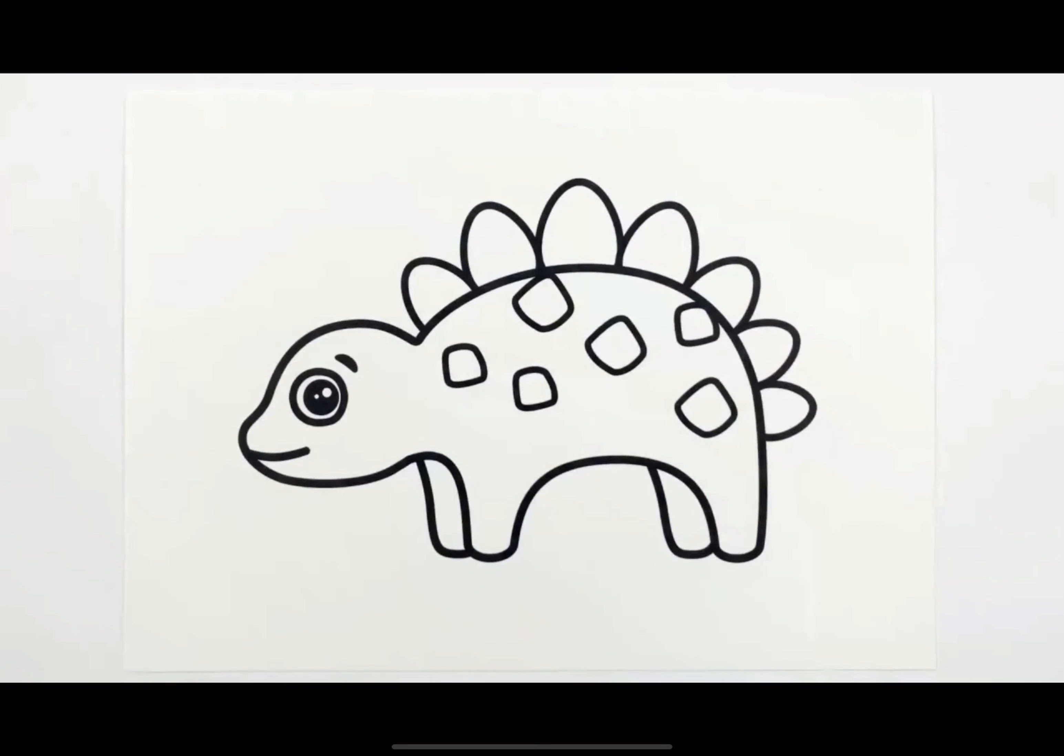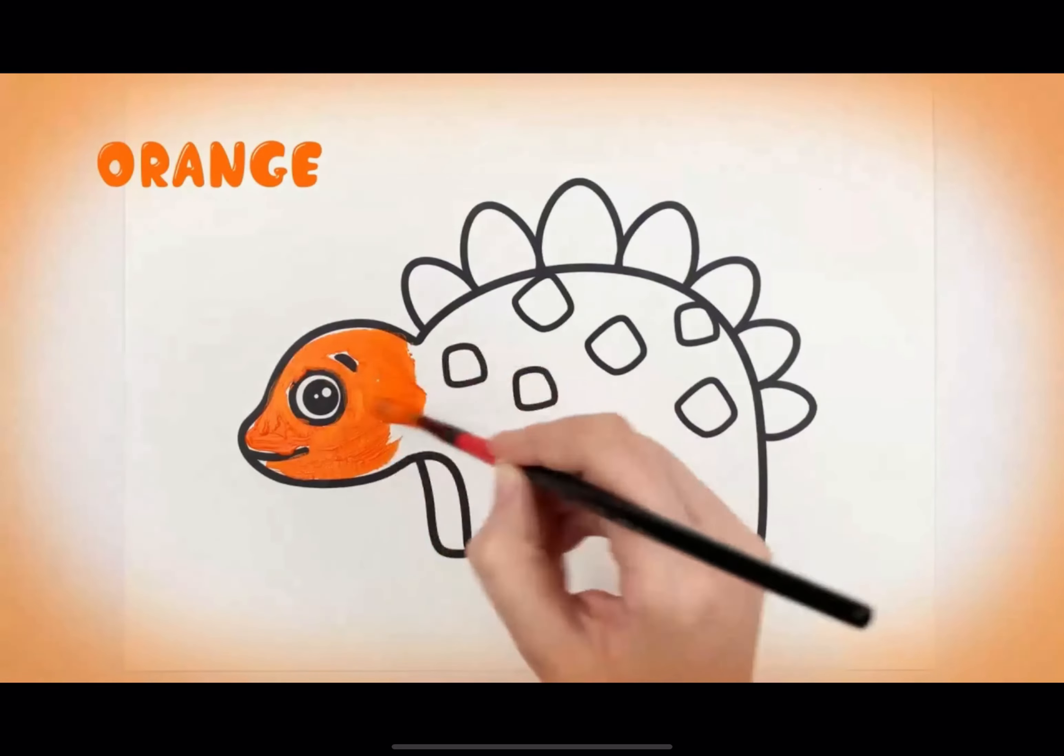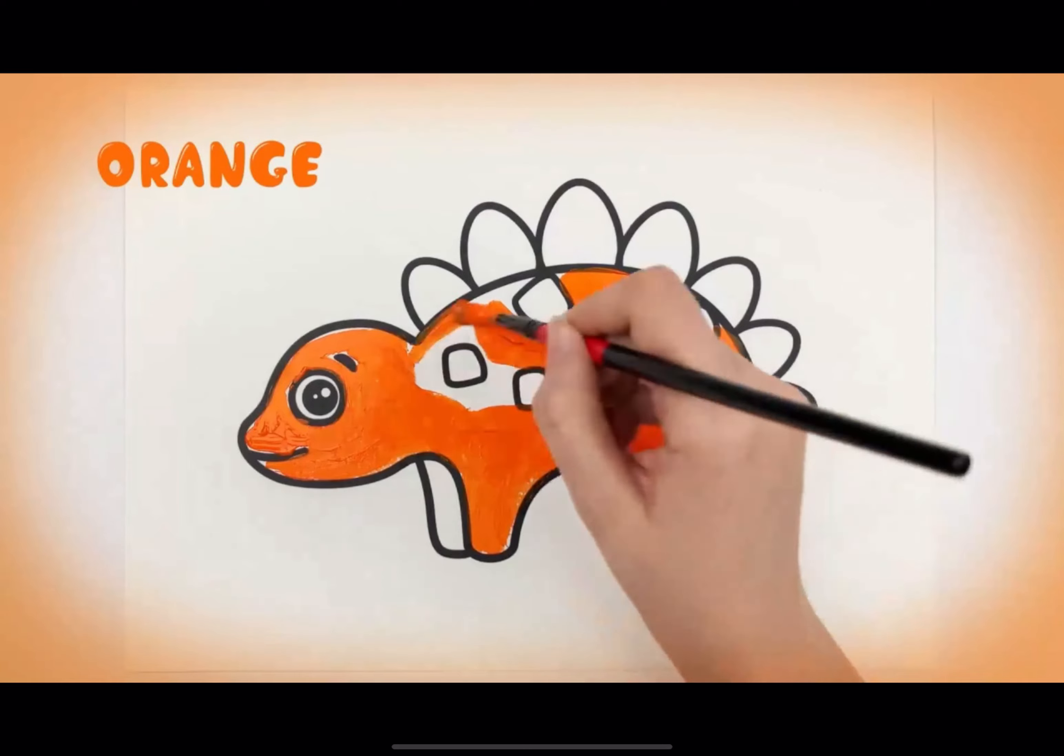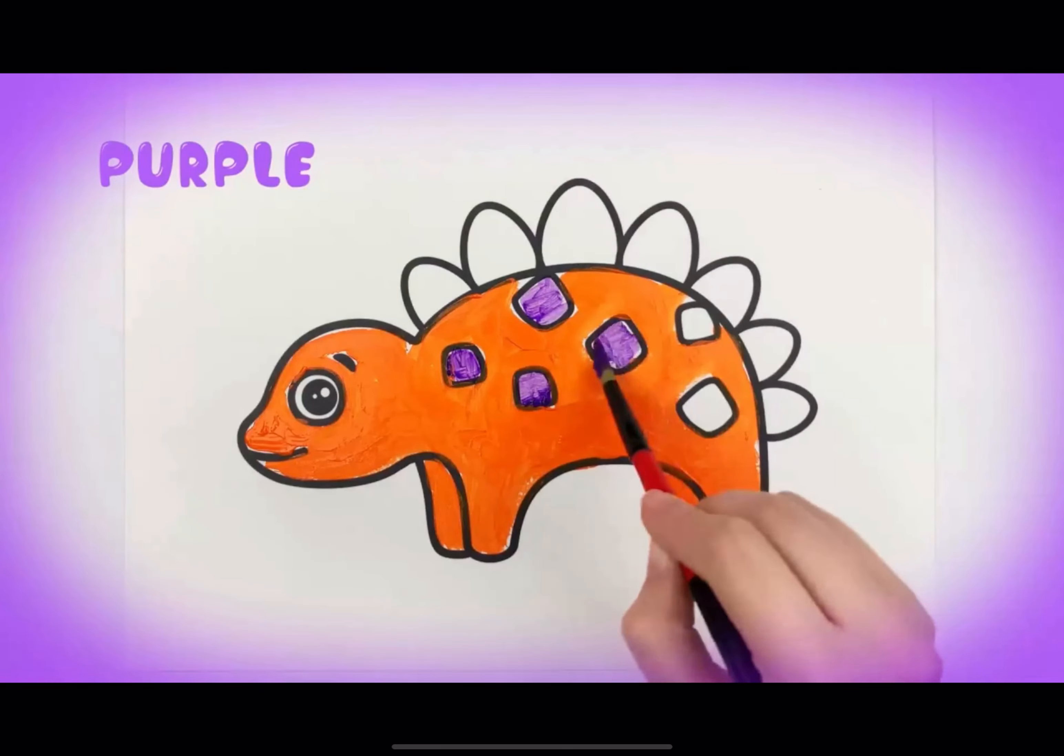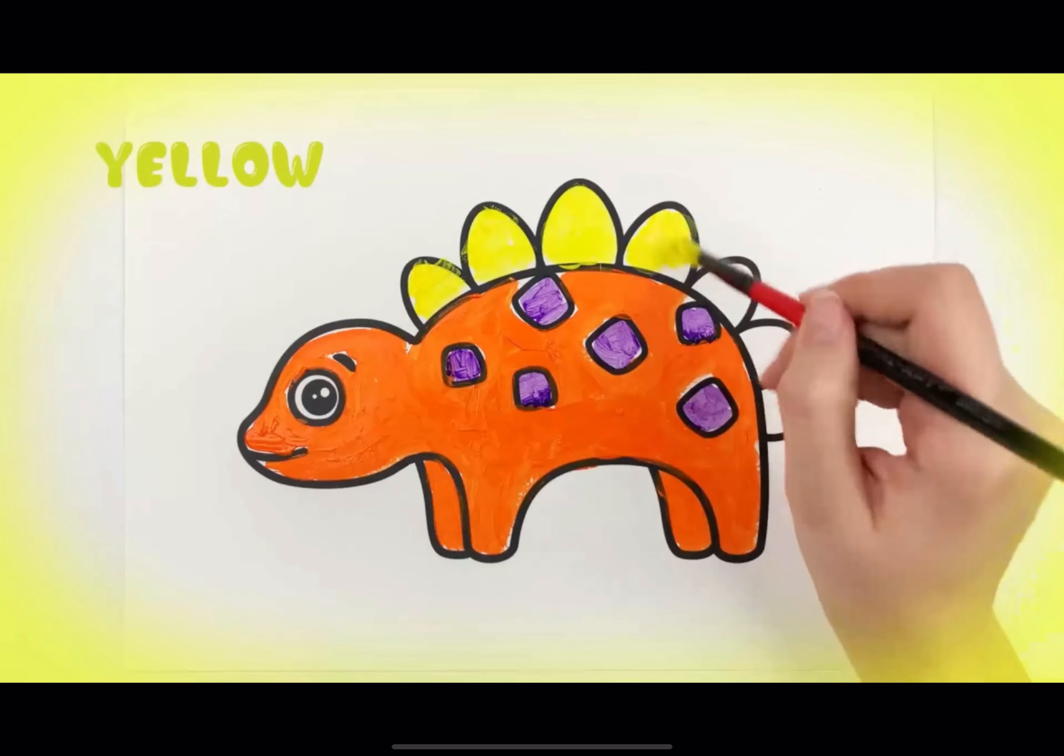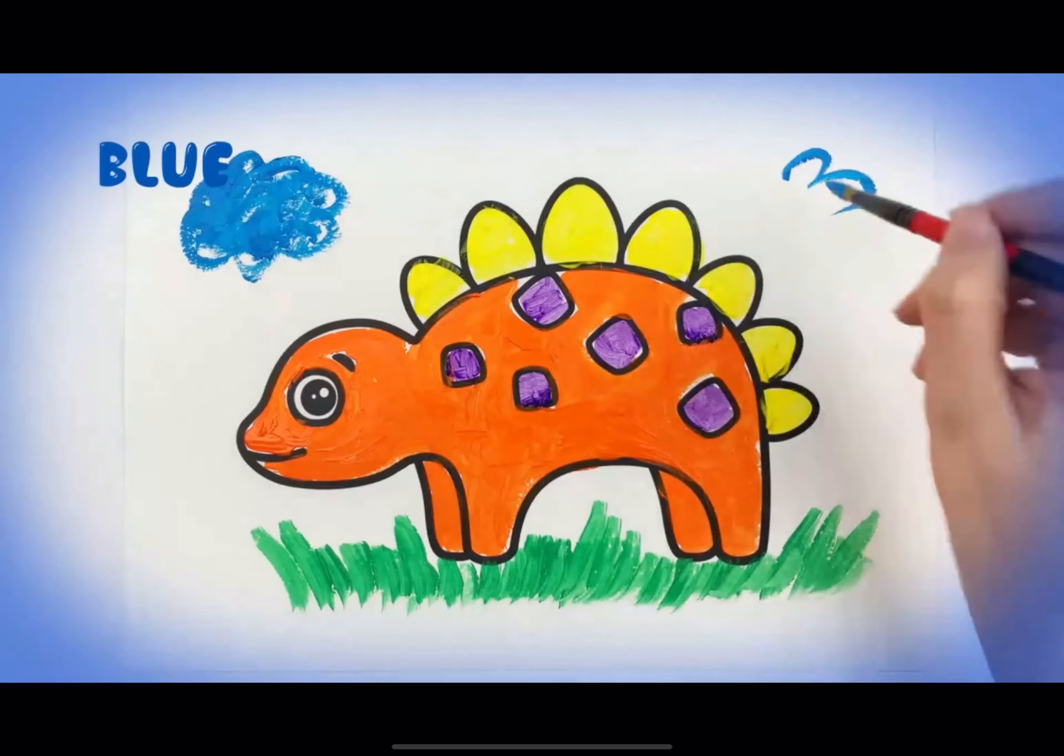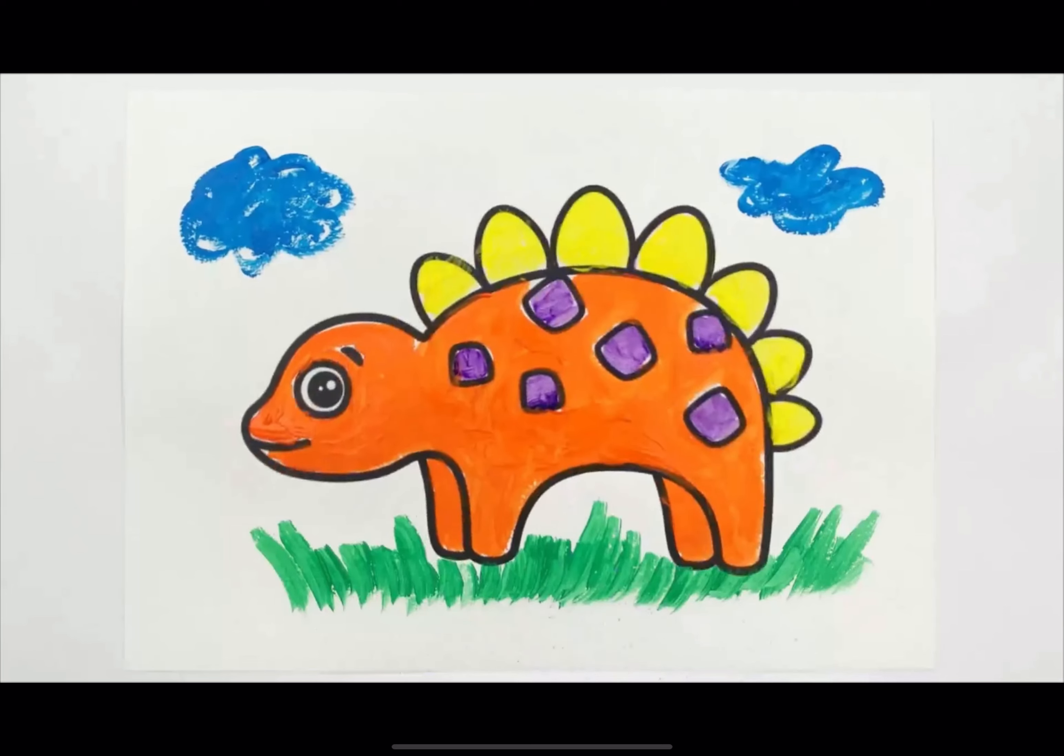Coloring the dinosaur. Orange, purple, yellow, green, blue. Looks great.